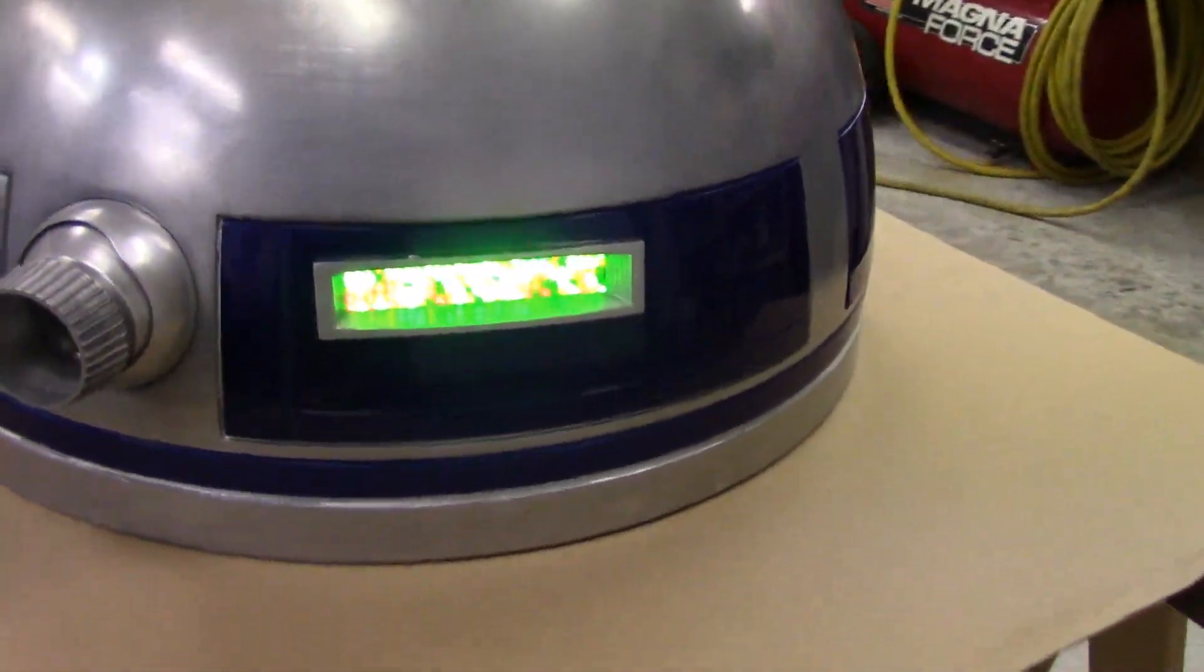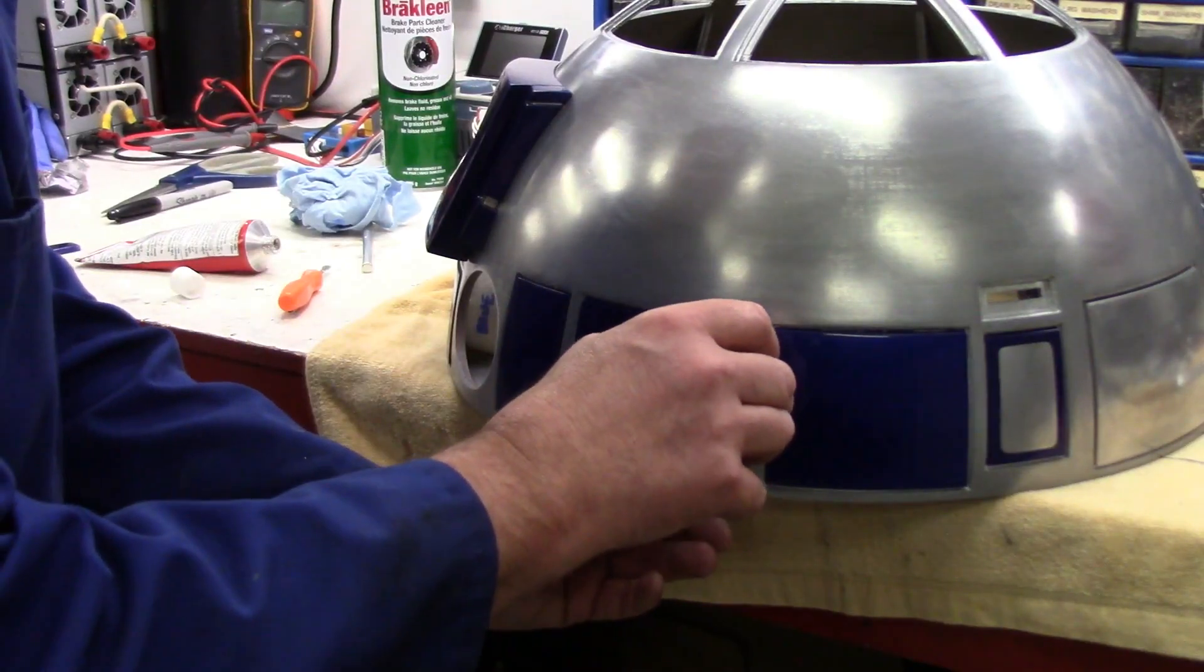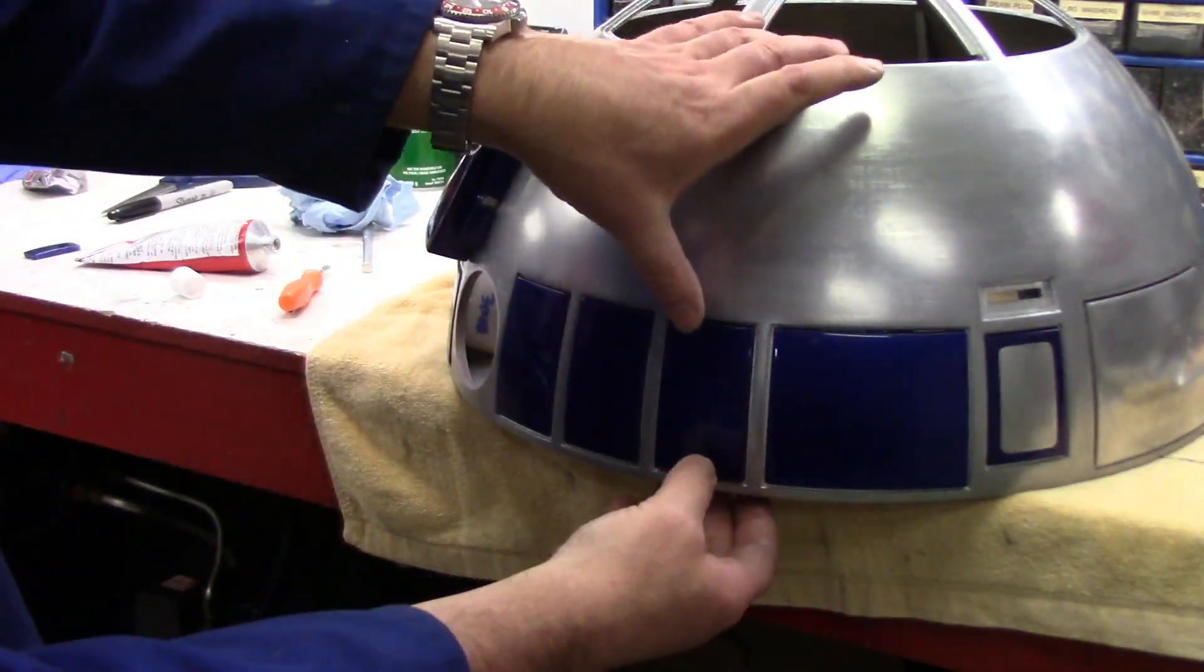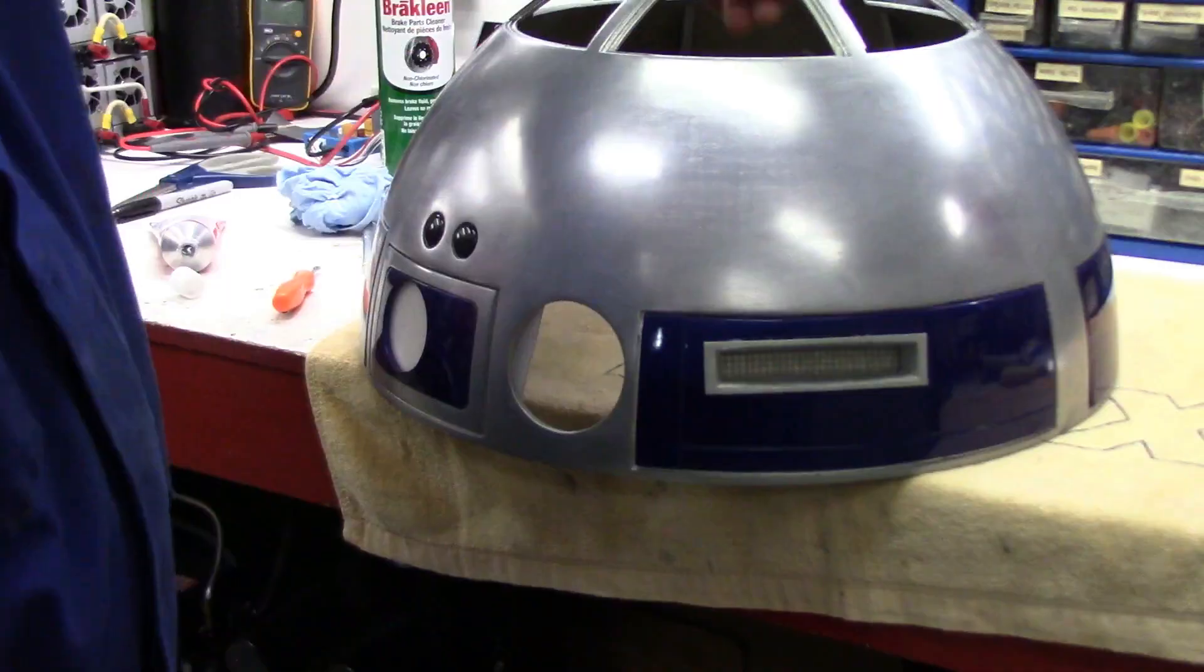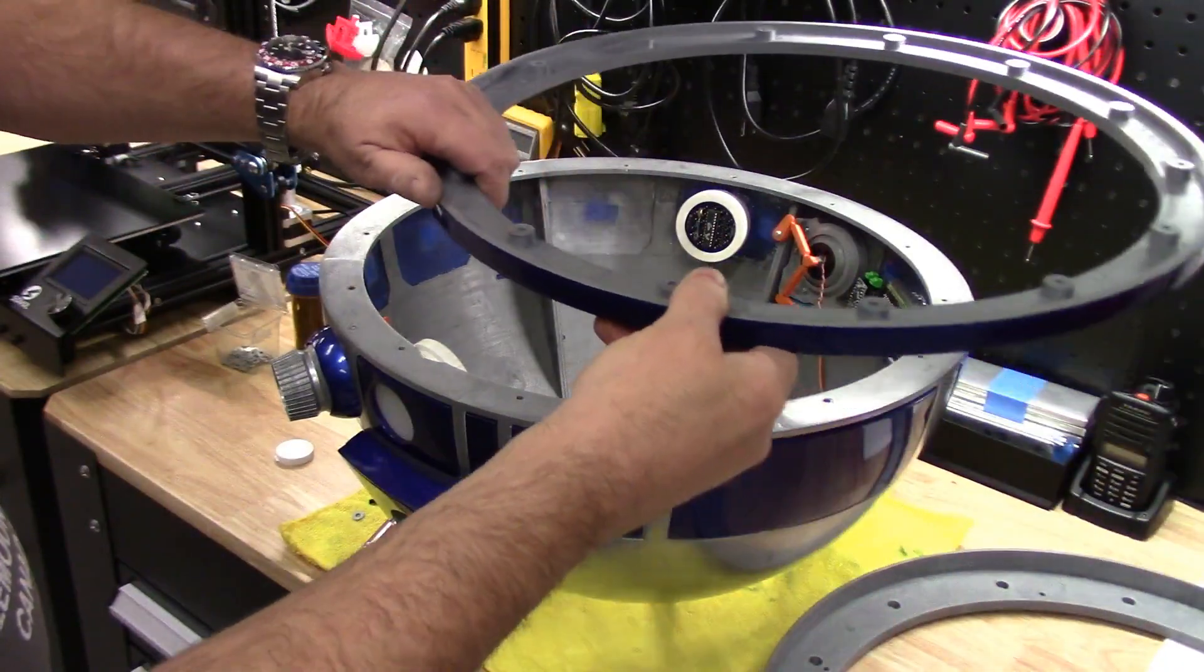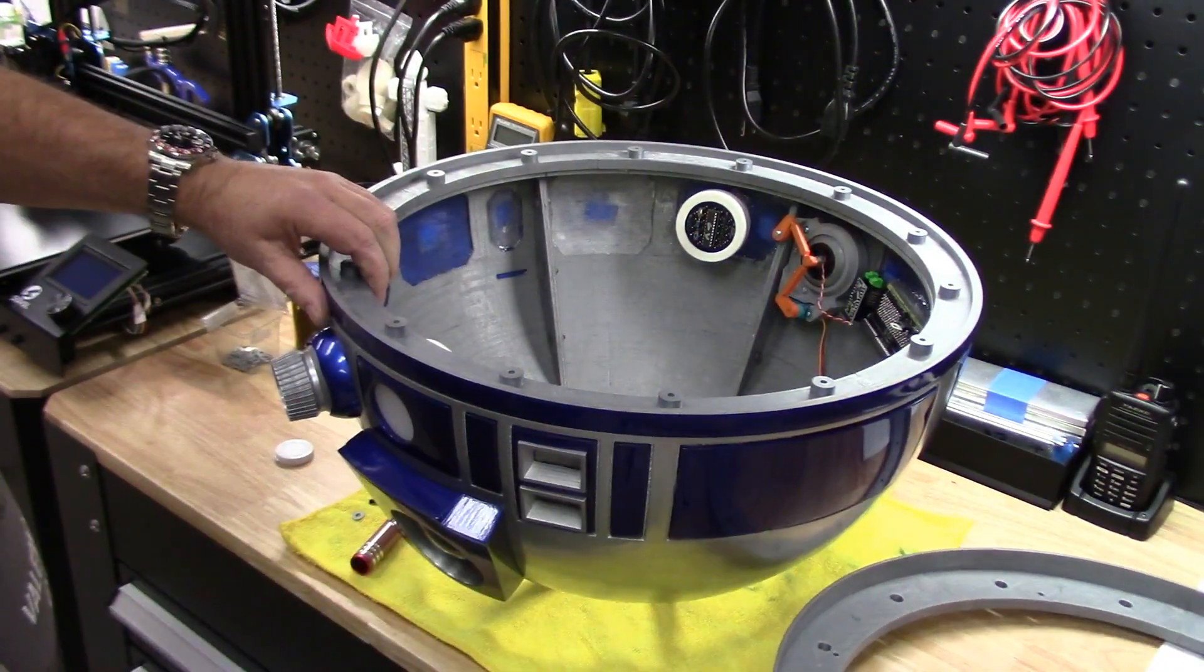Howdy folks, John here. Welcome to part 4 of the R2-D2 build series and the completion of the dome. Finally! Today we'll be installing the lights, hollow projectors, gluing in all the panels and screwing both lower rings to the dome. As you can see, there's lots to cover today. Let's get started!